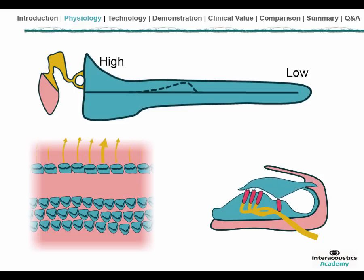The tone comes out of the ear, travels back over the basilar membrane through the middle ear, and in the ear canal you can measure that the otoacoustic emissions are coming out of the ear.